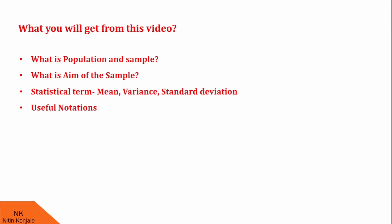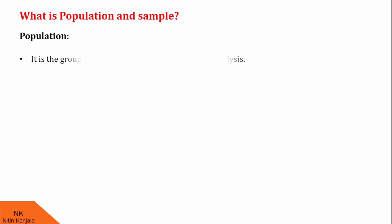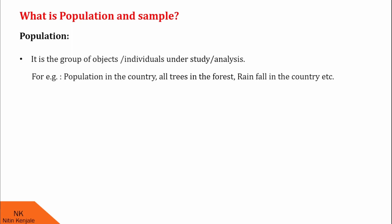Now, proceeding with the first question: what is population and sample. First, population — it is the group of objects or individuals under study or analysis. For example, the population in a country, all trees in a forest, or rainfall in a country can be considered as examples of population.